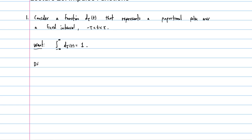We define our function D sub tau by the following piecewise formula. D sub tau of T equals one over two tau — that's a constant — when T is between the impulse range, negative tau and tau. And then it's zero otherwise.